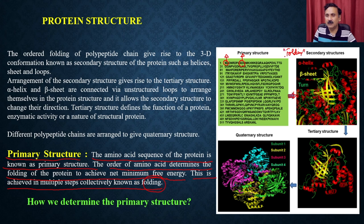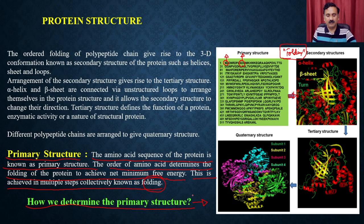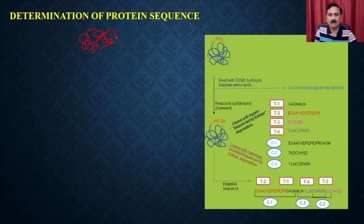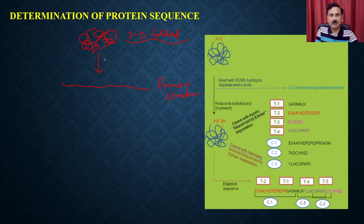When the primary structure folds into a proper three-dimensional conformation, it gives the secondary structures. To determine the primary structure, you first need to obtain the primary structure and then sequence the protein to know the amino acid sequence. The steps start with the three-dimensionally folded protein containing tertiary and secondary structures, and first you convert that into a linear chain of amino acids — meaning you unfold the protein by chemical or enzymatic methods.